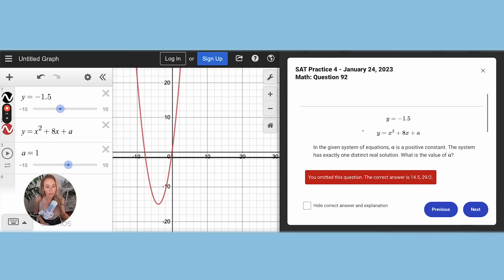So if I want to find out what A is going to be, which is the Y intercept of the quadratic, when there's one solution, I'm going to move A around, and I want to shift it up. I'm trying to get that vertex to touch the line. You see how I'm not quite there yet?